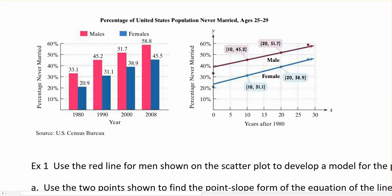In this video, we want to look at using linear equations from the previous video and applying them to a real-world scenario. Here I have a bar graph representing years along the x-axis, and each bar shows the percentage of never-married males or females. In 1980, 20.9% of females had not been married — specifically females between the ages of 25 to 29. The bar graph is one way for us to represent this information.